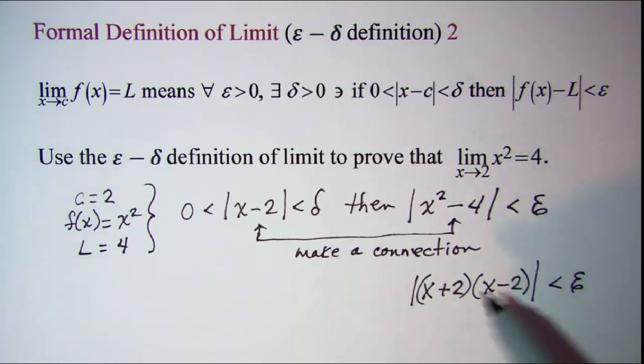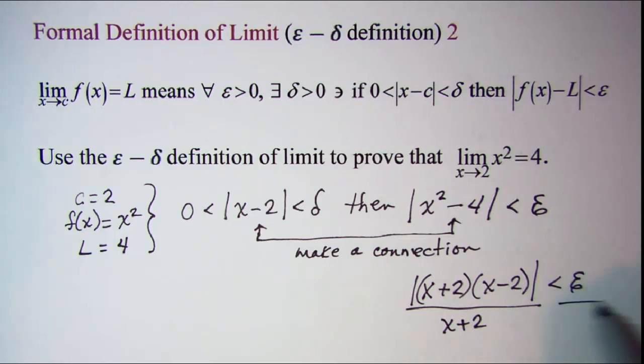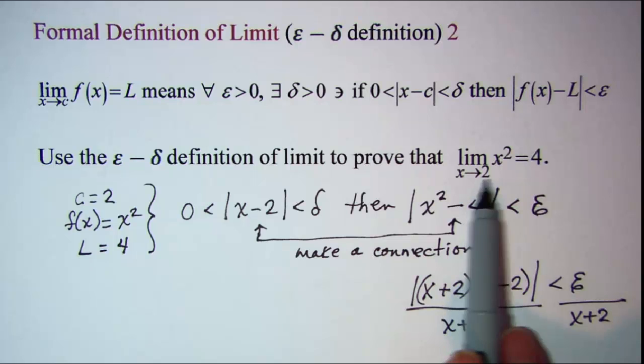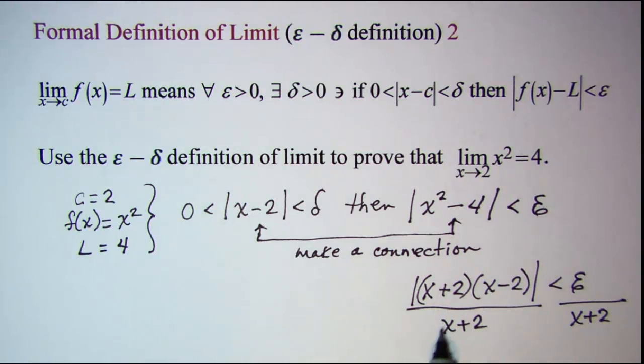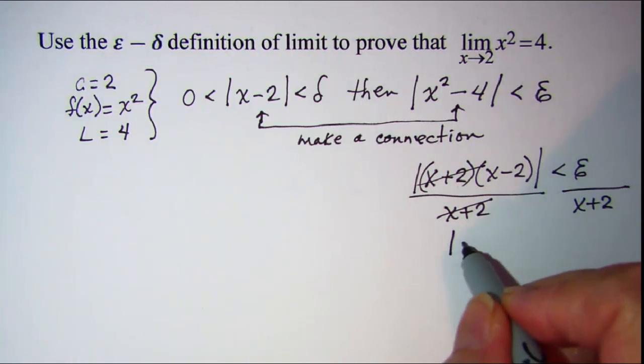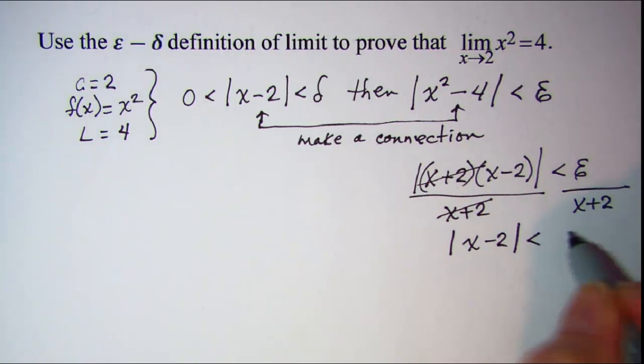Now if we divide both sides by x plus 2, and we know that since x is approaching 2, then it's going to be close to the value of 2. So this number that we're dividing by is going to be a positive number, so I don't need to worry about changing my inequality symbol. So this will cancel and I have absolute value of x minus 2 is less than epsilon divided by x plus 2.